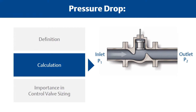The calculation for pressure drop looks like this: delta P equals P1 minus P2. The pressure drop is usually measured in pounds per square inch differential, or PSID.